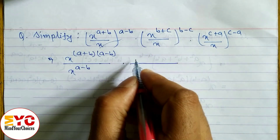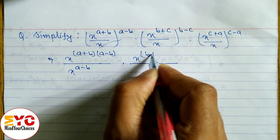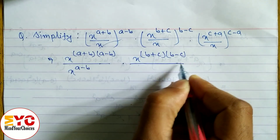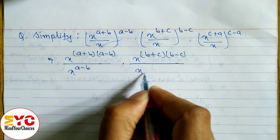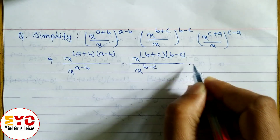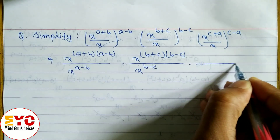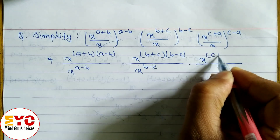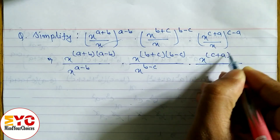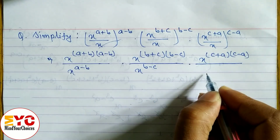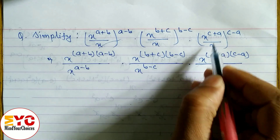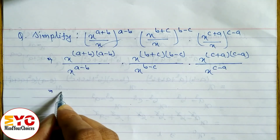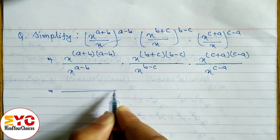For the second term, we multiply the powers and write x to the power (b+c)(b-c), and in the denominator also x to the power (b-c). For the last term, we write x to the power (c+a)(c-a), and in the denominator also x to the power (c-a).